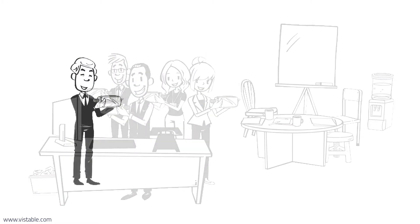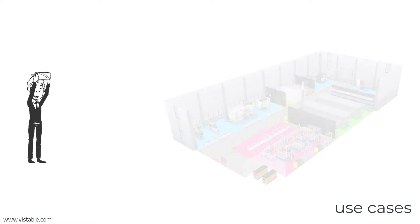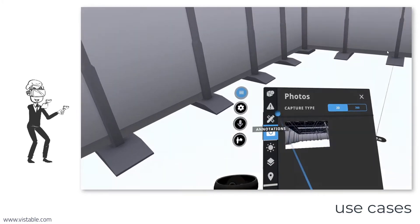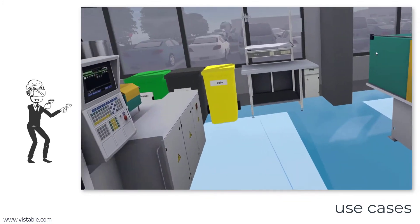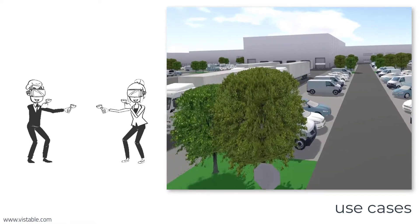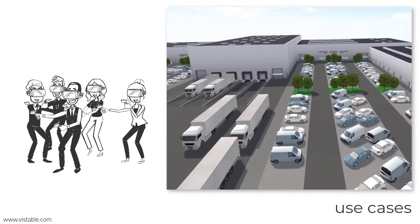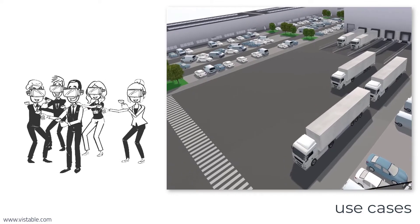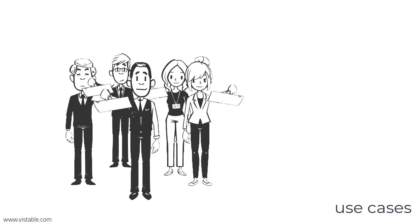But how does virtual reality support us in factory planning? Two use cases are most common. The first use case is error analysis — that is, the search for collisions, the compliance with safety distances, and the evaluation of workplaces with regard to sufficient movement space within your variants. The second use case is the communication of your planning solutions. In factory planning it is important to inform and convince many planning participants with sometimes very different professional backgrounds, and direct immersion into the planning solutions via virtual reality supports this exceptionally well.